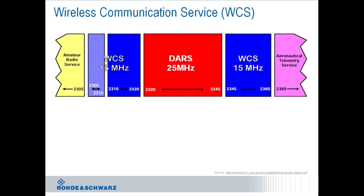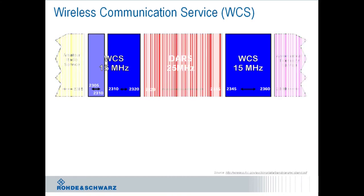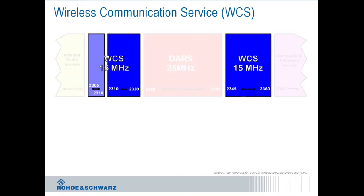First some more information on the WCS spectrum. The wireless communication service is a total of two times 15 MHz from 2305 to 2320 and 2345 to 2360 MHz. The spectrum was first auctioned in 1997 with the requirement to provide substantial service by March 2014.